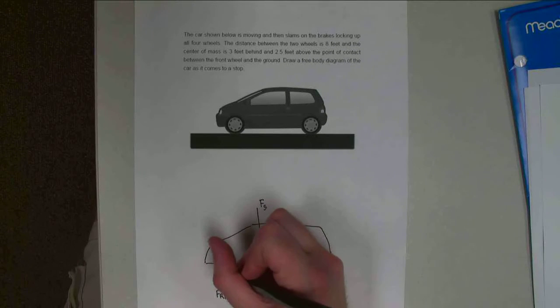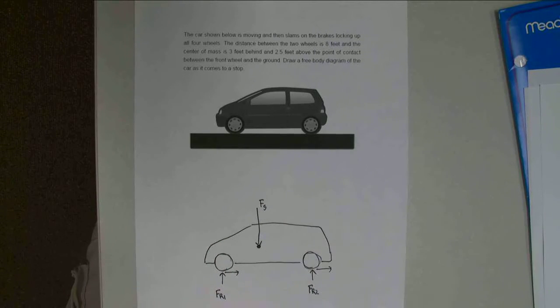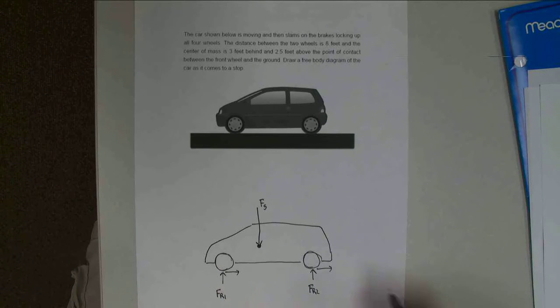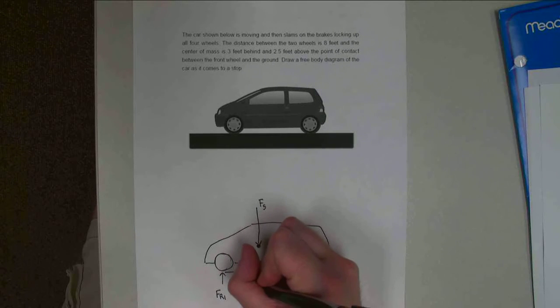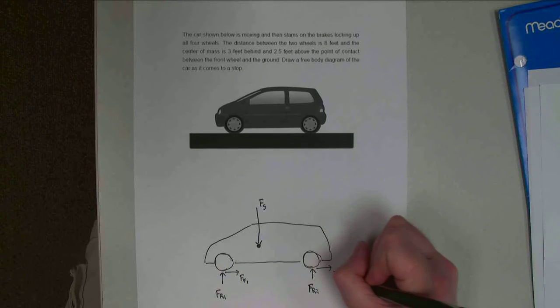So friction forces are parallel to the ground at both front and back wheels, and each one of these is going to have its own friction force. So friction force one, friction force two.